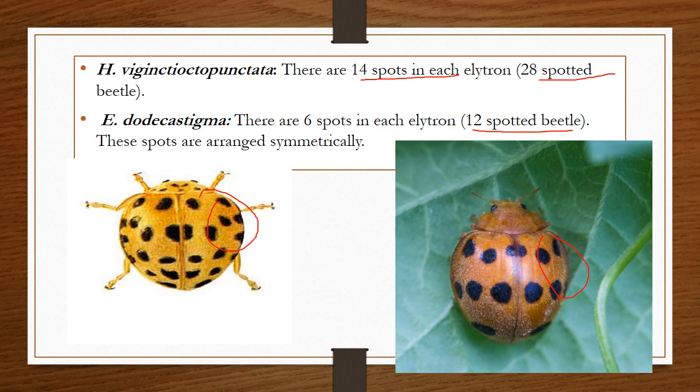Differentiation between both species: Epilachna vigintioctopunctata contains 14 spots on each elytron, totaling 28 spots — and is known as the 28-spotted beetle. Epilachna dodecastigma contains 6 spots on each elytron, totaling 12 spots — it is also known as the 12-spotted beetle.